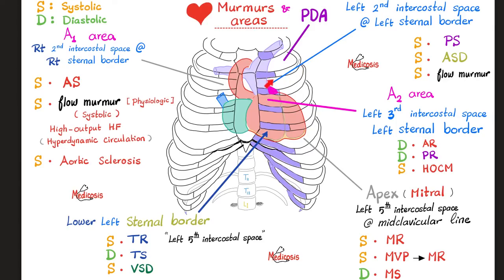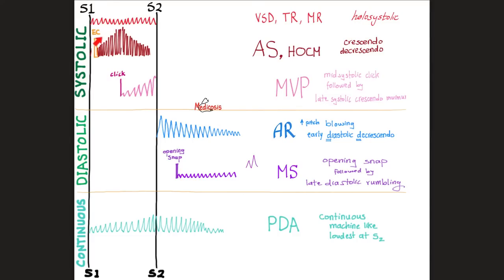The pulmonic area is at the left second intercostal space at the left sternal border. The murmur of pulmonic stenosis is a crescendo-decrescendo murmur, sometimes preceded by an ejection click. This is a systolic murmur, meaning it happens between S1 and S2. If you feel the patient's pulse while auscultating the murmur, you'll find that the murmur and the pulse happen at the same time, because it's a systolic murmur and the pulse is palpated during systole.